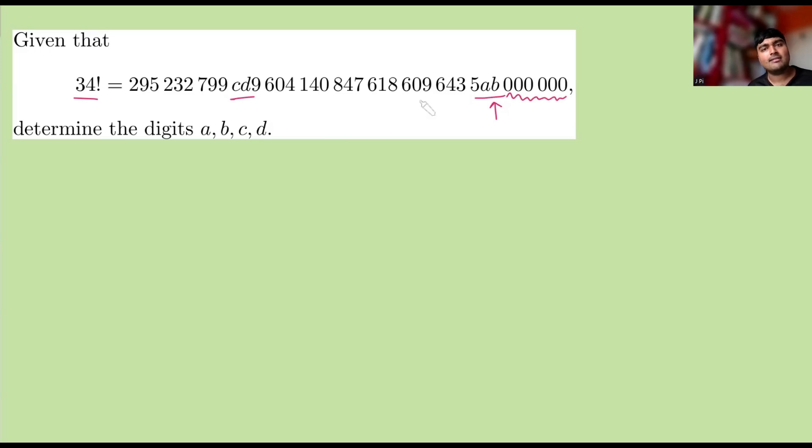So we're going to start by asking ourselves, how many zeros should a 34 factorial end in? Because if the answer is more than six, then that means that b is zero, and potentially a is zero as well. Okay, how do we work out how many zeros 34 factorial ends in?